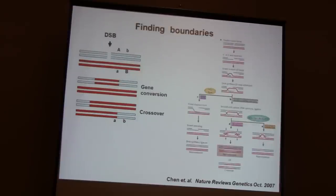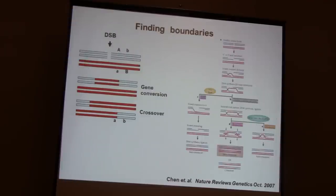Let me quickly reiterate what we are actually looking for. We have seen similar figures in the previous talks. All recombination is initiated with a double-stranded break, which in itself is not really observable as to what location that happened. But then you get the resection, D-loop, strand invasion, D-loop extension and migration.